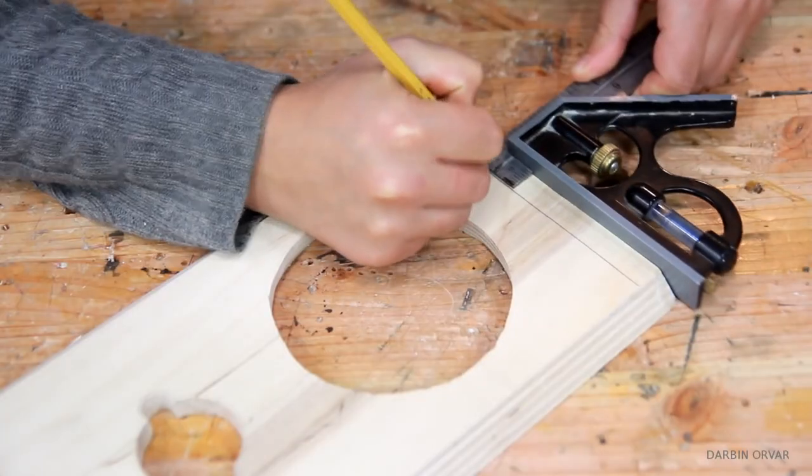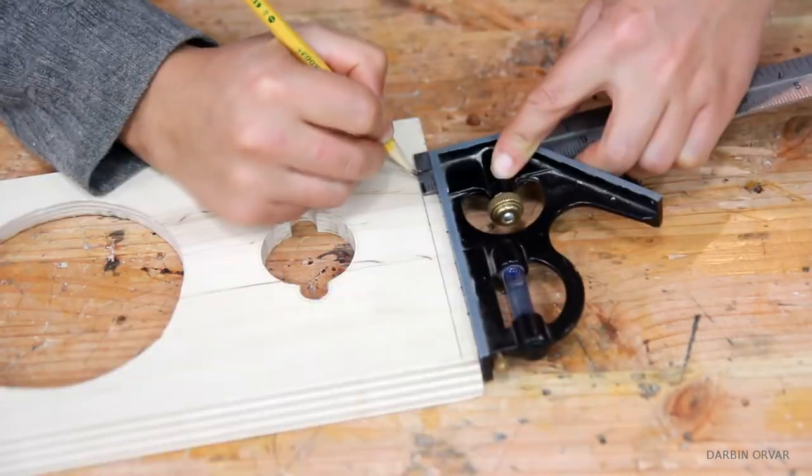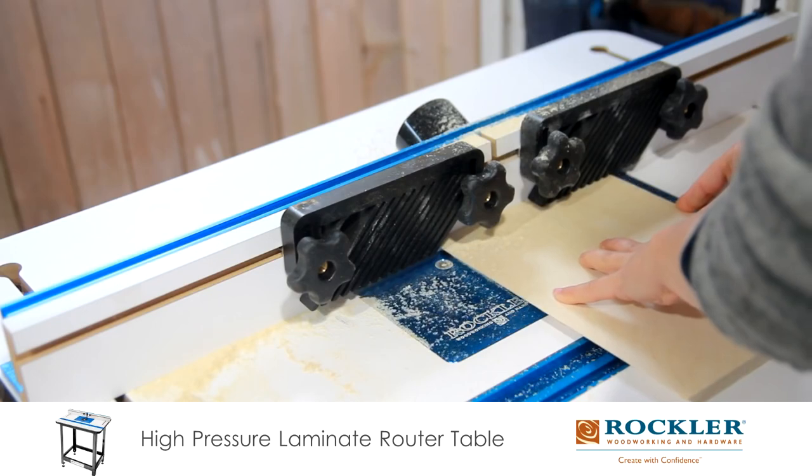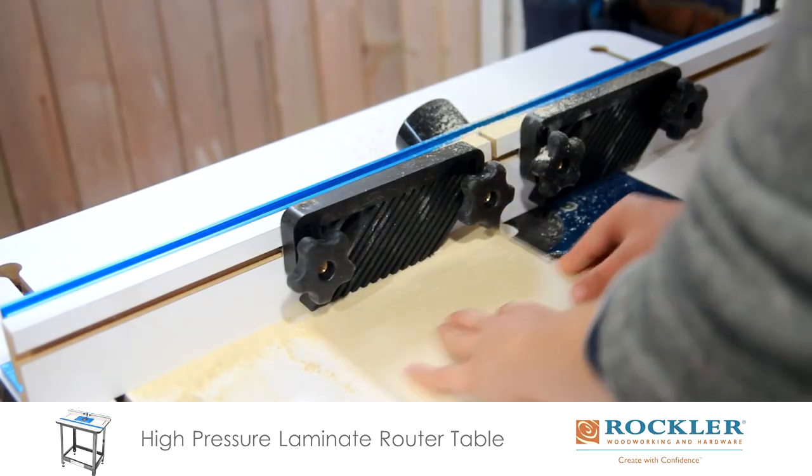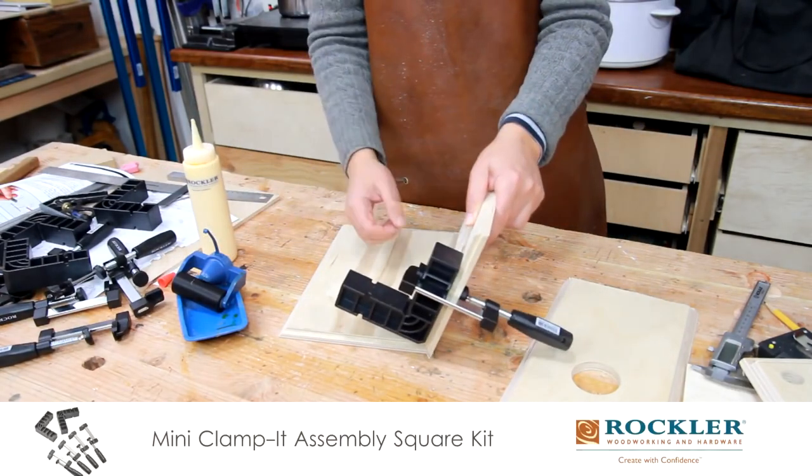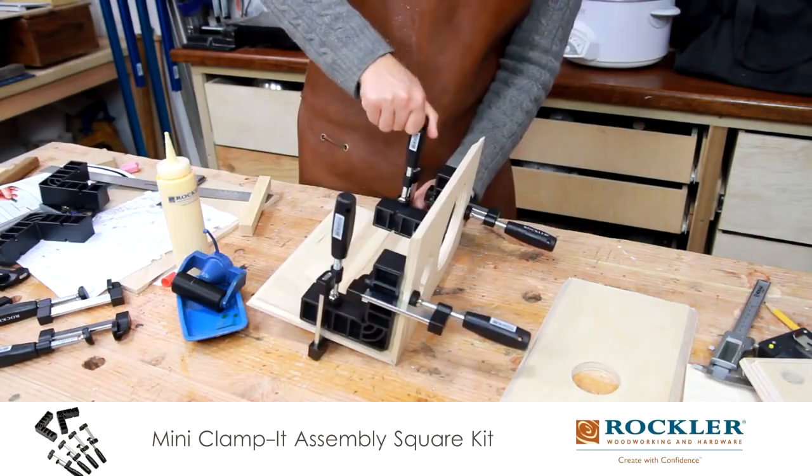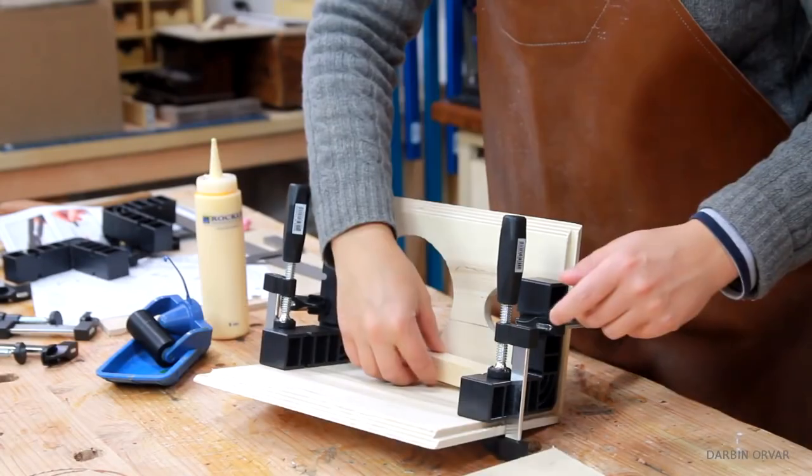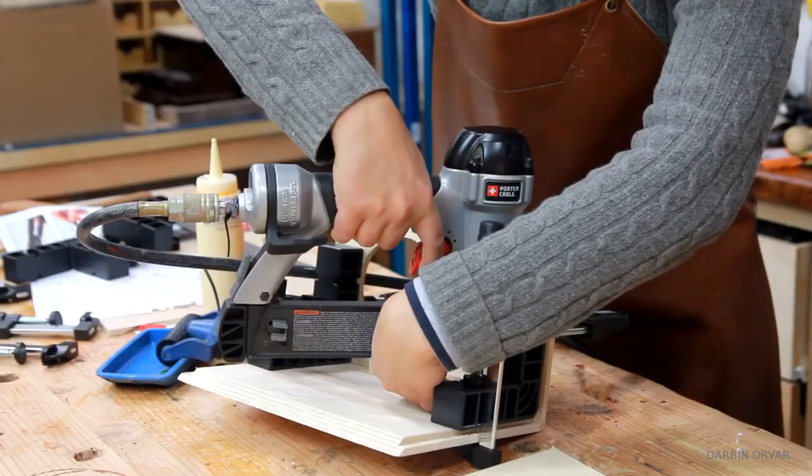To fit the bottom and the top in, I made some rabbets on the router table. Then it was simply a matter of gluing the pieces together. Using corner clamps is really helpful when you want to make sure everything is square. I also added a block in the corners which I glued and stapled in for additional stability.